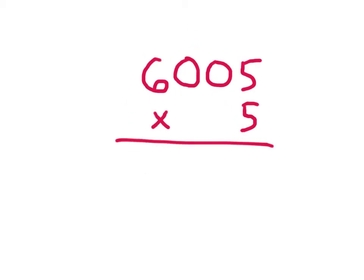Here we have 6,005 times 5. We do start in the ones place. 5 times 5, which is 25. Write 5. Regroup that 2 into the tens place. 5 times 0 is 0. Do add that regroup in. Plus 2, which is 2.